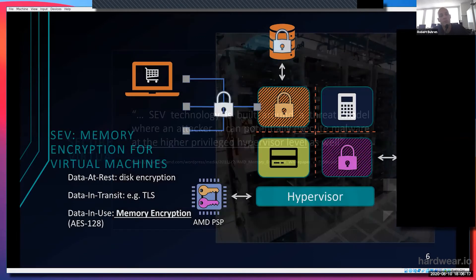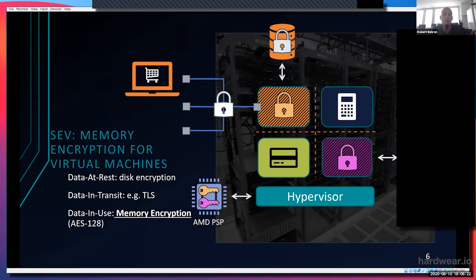How does SEV work? SEV adds memory encryption with keys which are unique per virtual machine. The keys are generated and used by a dedicated secure processor, which is part of the x86 die. The secure processor runs firmware provided by AMD and the keys used inside that secure processor are not accessible by the hypervisor. So your disk encryption keys are safe because when they are in use inside the virtual machine's memory, they're encrypted and the hypervisor can no longer access them directly.